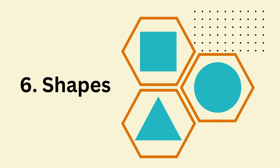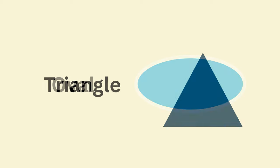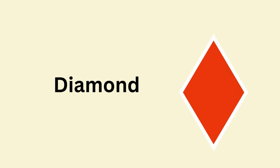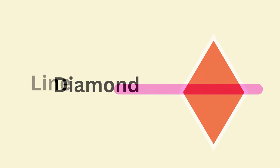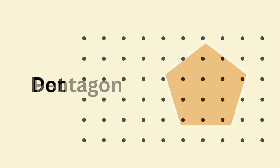Sixth: shapes. Circle, square, rectangle, oval, diamond, line, dot, pentagon, hexagon.